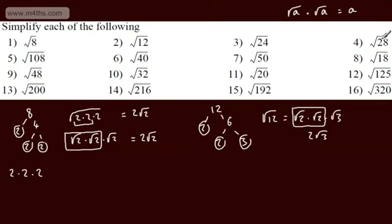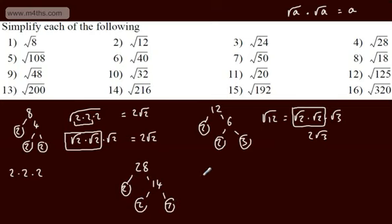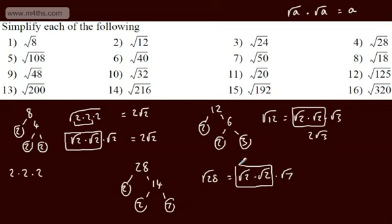Let's look at root 28. We could write 28 — divide by 2 to get 14, divide by 2 to get 7. So root 28 equals root 2 times root 2 times root 7. Again, we've got root 2 times root 2, which gives us 2, so we'd have 2 root 7.